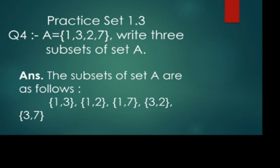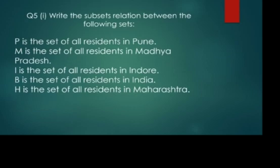Now we'll move to question number 5. What is given in the question? Write the subset relation between the following sets. P is the set of all residents in Pune, M is the set of all residents in Madhya Pradesh, R is the set of all residents in Indore, B is the set of all residents in India, and H is the set of all residents in Maharashtra. From this we have to make the subset relation.